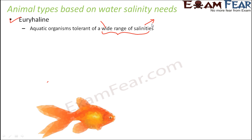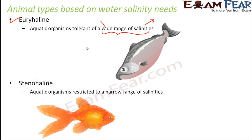A lot of aquatic organisms can survive in areas with high salinity as well as in water bodies with low salinity. That means there are fishes that can survive very well in oceans as well as in fresh water. An example of a Euryhaline fish would be salmon — this is a type of fish which can survive in a wide range of salinity.